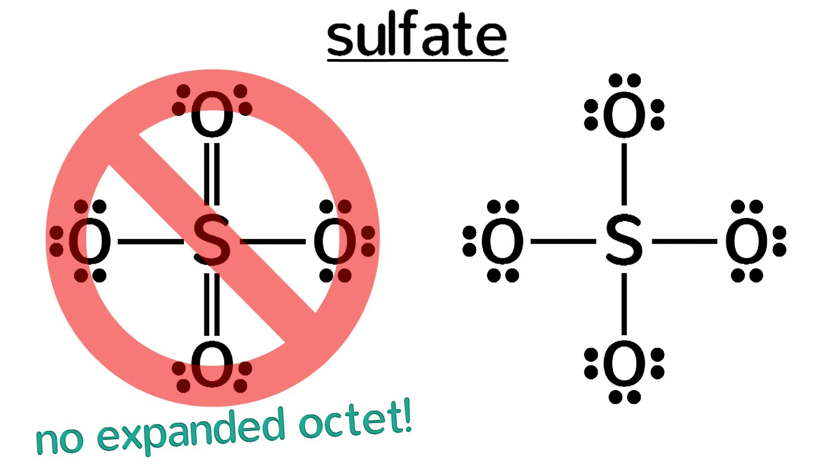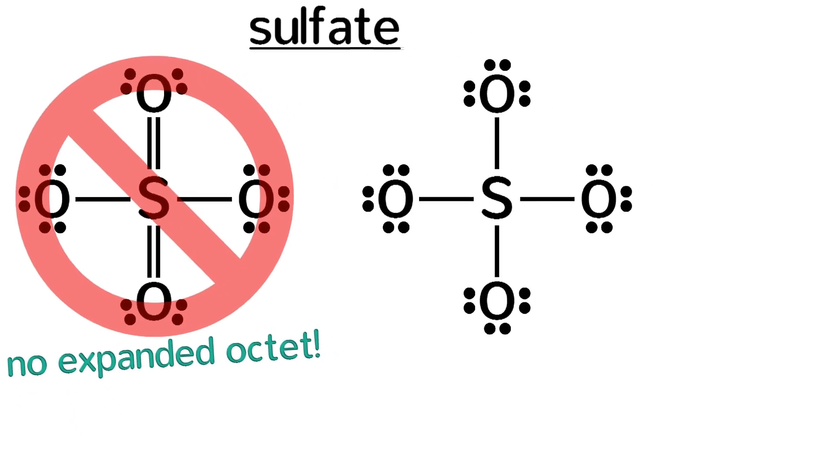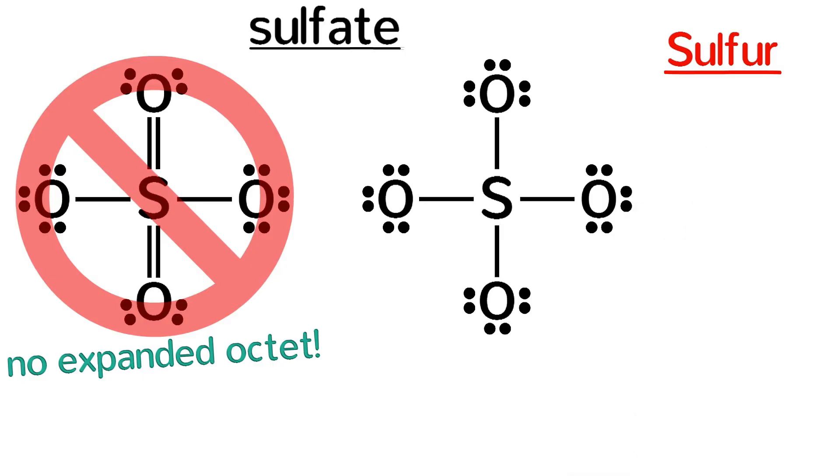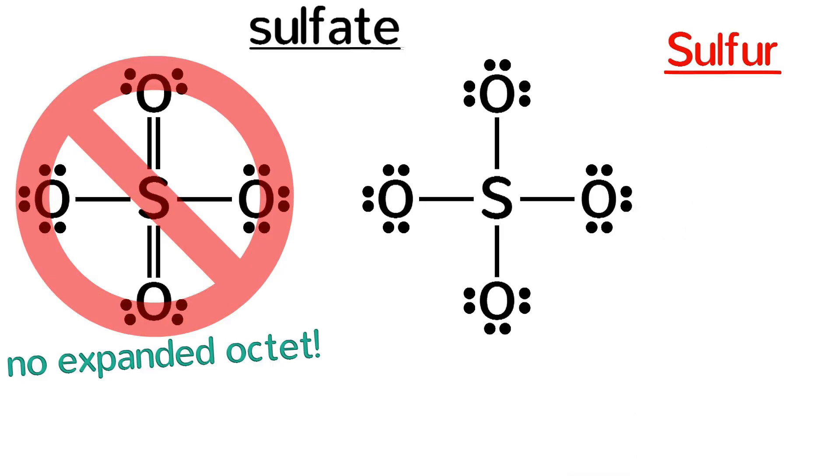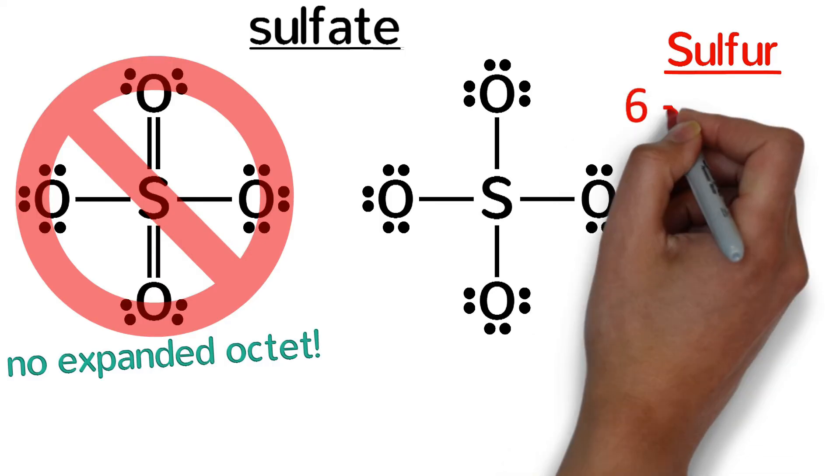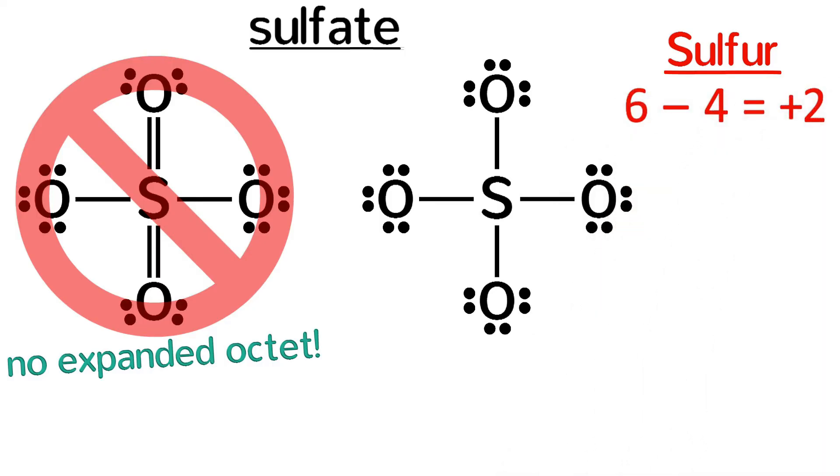Pause the video and try to determine the formal charges of the atoms in sulfate. Notice that all the oxygens are identical. As an atom, sulfur has six valence electrons, but in sulfate it has only four, one from each single bond, so the formal charge is six minus four, which is positive two.